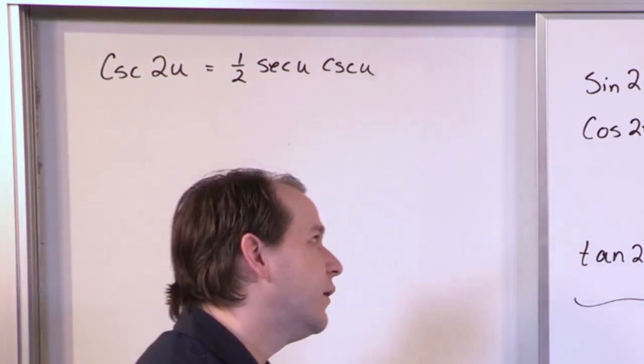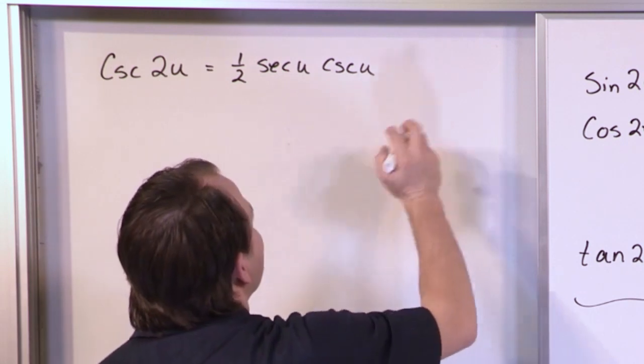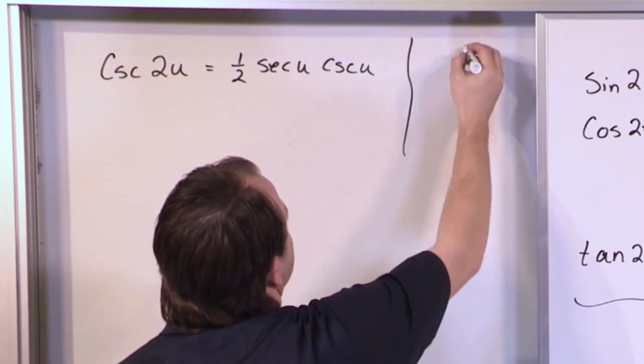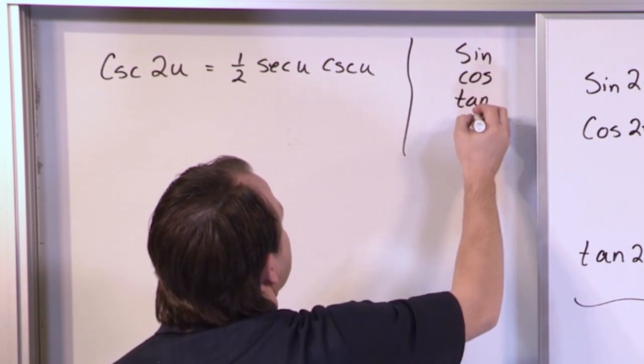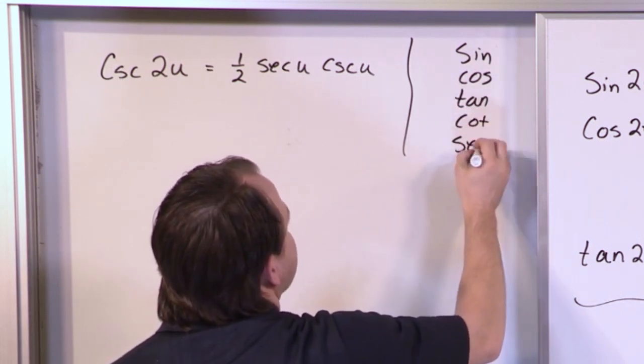But then you realize also that you know the trig rainbow. I can turn this cosecant into something. So I would just write it down. Sine, cosine, tangent, cotangent, secant, cosecant.